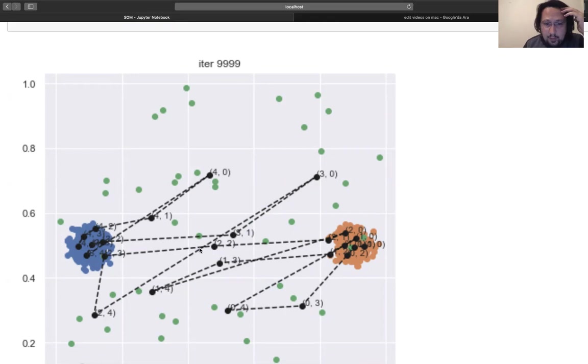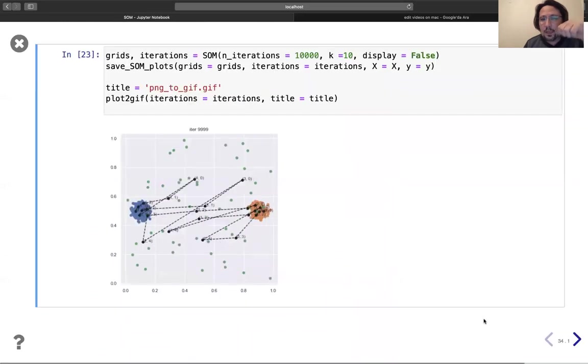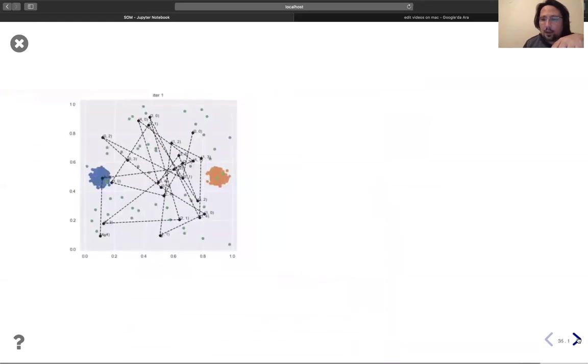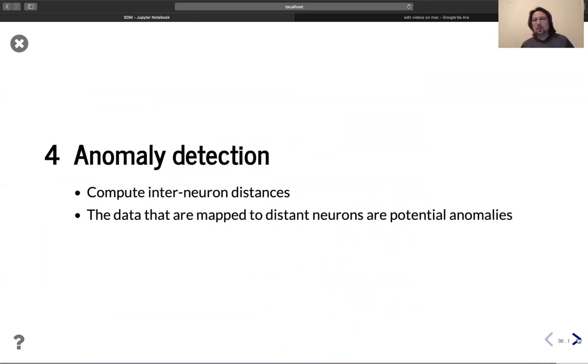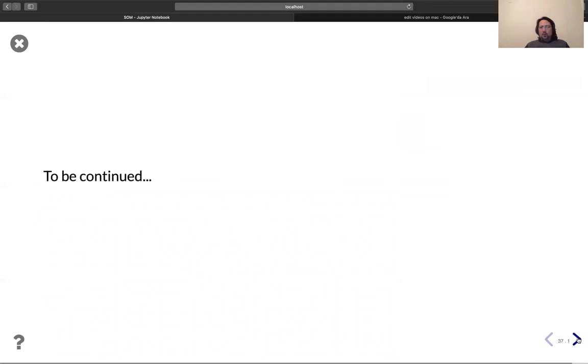But this neuron is not in this cluster of neurons or in this cluster of neurons. So all the green points you see that are mapped to the in-between black neurons, they are potential anomalies. So we can use self-organizing maps for anomaly detection. Maybe I will do another video for anomaly detection.